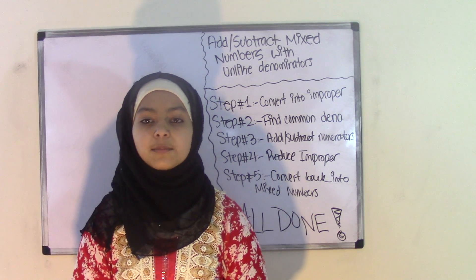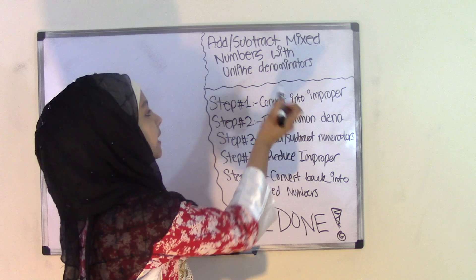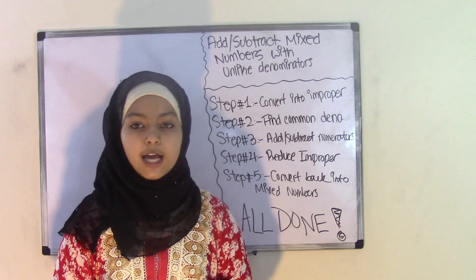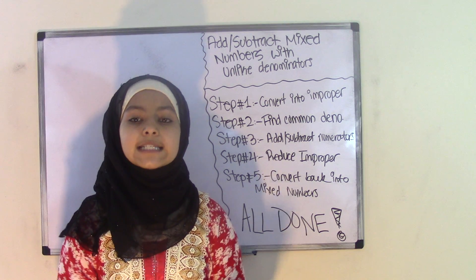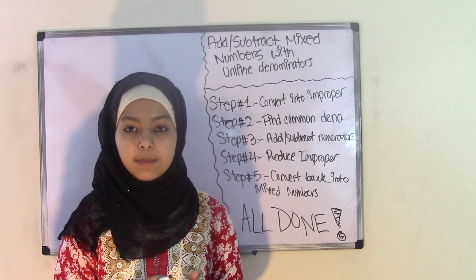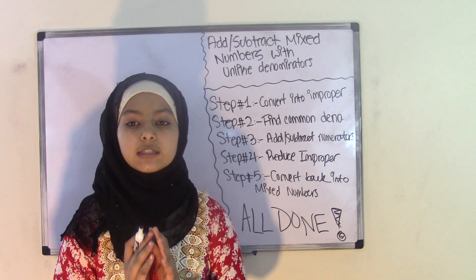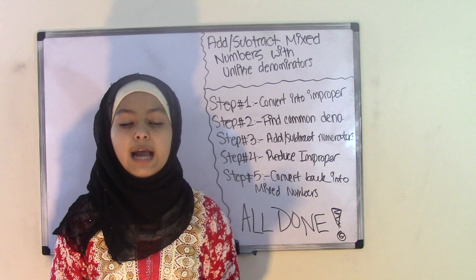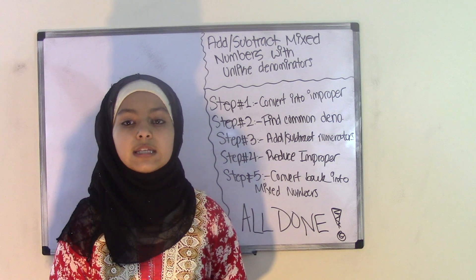Hey guys, welcome back to Provence's Map Club. Today's topic is adding and subtracting mixed numbers with unlike denominators. All it means is that we'll be learning how to add and subtract mixed numbers — a whole number and a proper fraction combined — with unlike denominators, which are just denominators that are not the same. Remember that whenever you're adding or subtracting fractions or mixed numbers, your denominator is always going to stay the same.